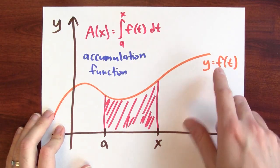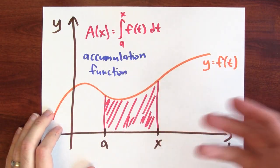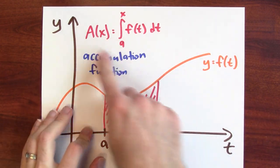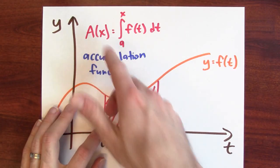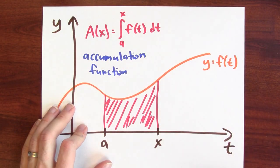When is this accumulation function increasing? As long as this function little f is positive, the accumulation function is increasing. Look, to determine whether the function's increasing, I just have to plug in bigger inputs and see if I get bigger outputs. That's what increasing means.